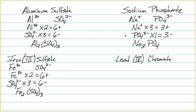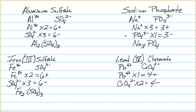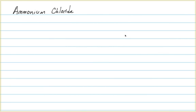One more example: lead(IV) chromate. Lead has an oxidation state of four-plus and chromate is a two-minus. We need two leads and two chromates to get our common multiple of four, so the final formula is Pb₂(CrO₄)₂.